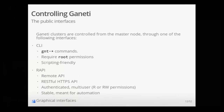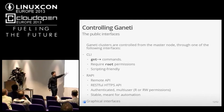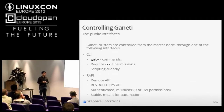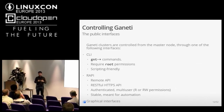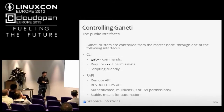How can the sysadmin control Ganeti? Basically in a few ways. The public interfaces are the command line interface — a bunch of commands named gnt-something: gnt-cluster, gnt-node, gnt-network, and so on. These commands require root permission and are scripting-friendly with regular output. We try never to change this between releases unless really required. But if you need proper scripting, there is a better way: our remote API, which is a REST HTTPS API with authentication, supporting multiple users with read or write access to the cluster, explicitly designed to be stable because it's meant for automation.